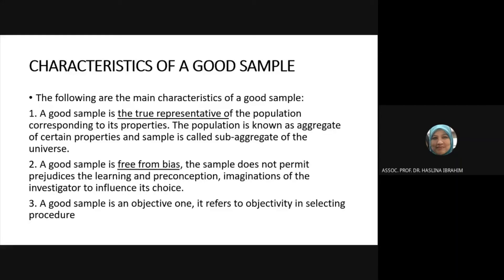A good sample is the true representative of the population corresponding to its properties. The population is known as the aggregate of certain properties, and the sample is a sub-aggregate of the universe. For example, if you want to interview people in an apartment with a population of 200 but only want 30, you arrange by level — 4 from level 1, 4 from level 2, and so on until you get your target number.